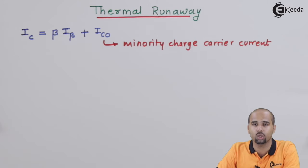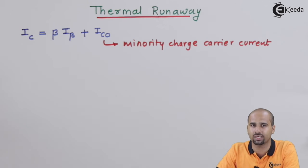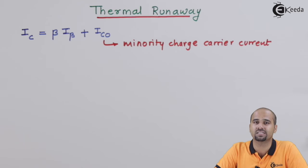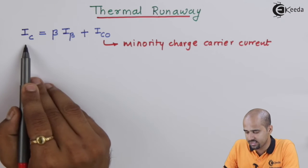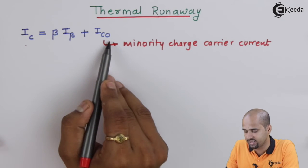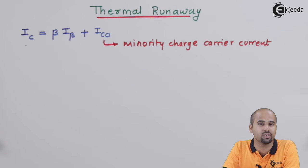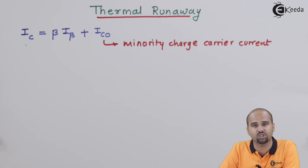As we know, a silicon extrinsic semiconductor comprises majority as well as minority charge carriers. When majority charge carriers flow from emitter to collector, in the base region there are also minority charge carriers such as electrons, and these lead to an additional current flow which contributes to the collector current. So Ic is comprised of beta into Ib plus Ico, where Ico has two components: Icbo, the collector-to-base current when emitter is open, and Iceo, the collector-to-emitter current when base is open. Here Ico is considered as the minority charge carrier current.